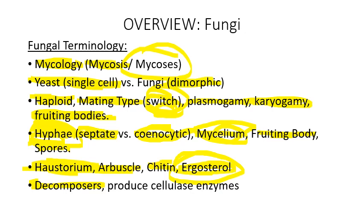Fungi and yeast are decomposers — they break down and recycle dead organic material, particularly cellulose. When leaves fall off trees, it's either ants, termites, or fungi that break them down. Mushrooms growing out of a dead tree are there because they can make enzymes that break down cellulose. In fact, there are only two types of organisms on earth that can make cellulase enzymes: fungi and certain rare types of bacteria.